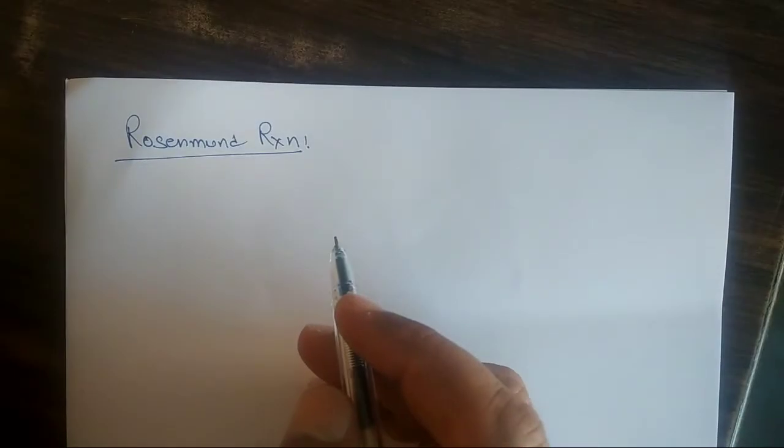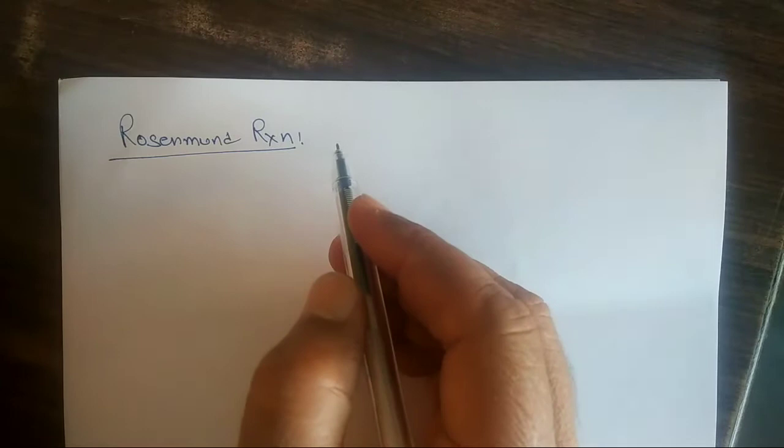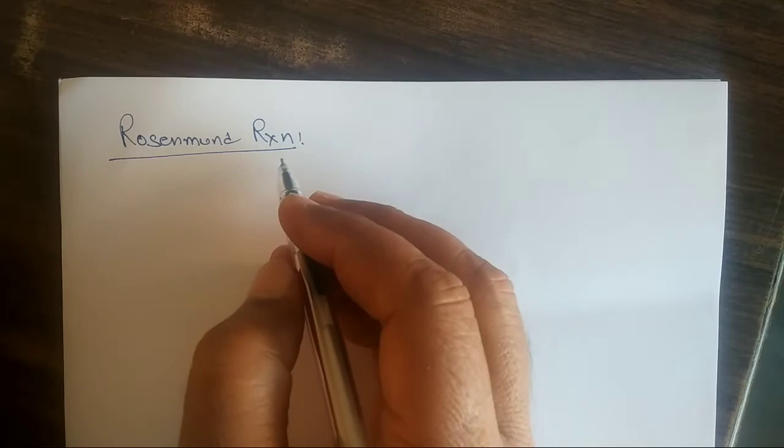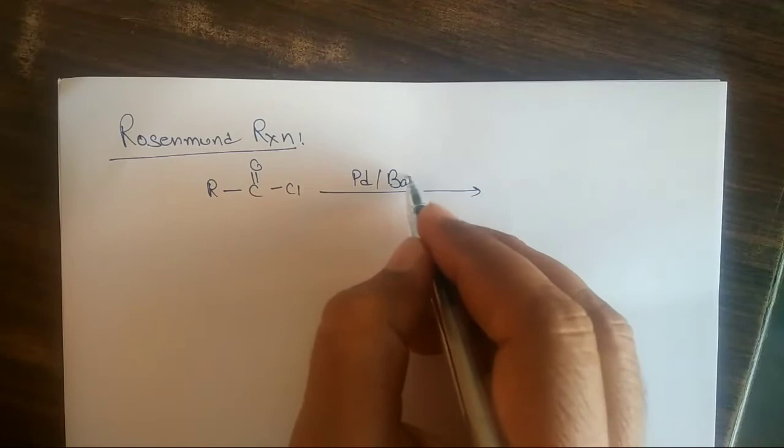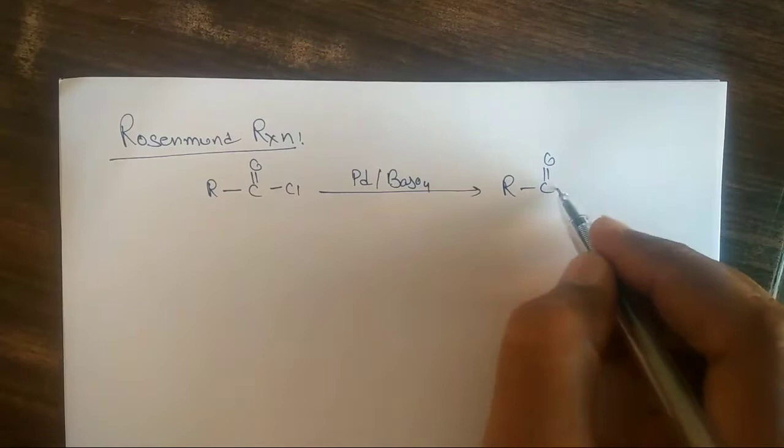Hello guys, my name is Dr. Sabjit Rala. Today we will study the next method of preparation of aldehyde and ketone by the Rosenmund reaction. In the Rosenmund reaction, we take acid chloride and in the presence of platinum and barium sulfate, we get aldehyde with loss of HCl.